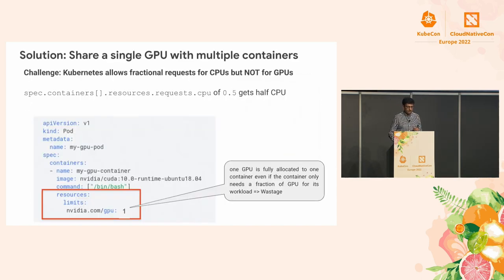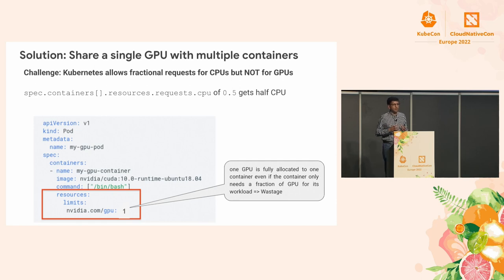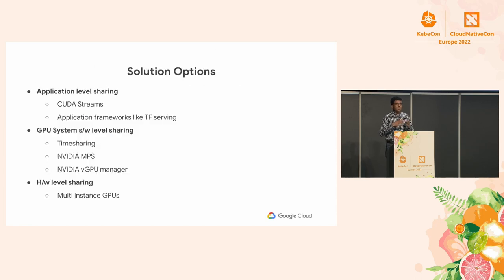The main challenge today is that Kubernetes allows fractional utilization of CPUs but does not allow fractional utilization of GPUs. A Kubernetes workload can ask for 0.5 virtual CPUs and Kubernetes knows how to allocate that. But today, you cannot ask for 0.5 GPUs in Kubernetes. As a result, one GPU is fully allocated to one workload even though the workload needs only a fraction of the GPU. There are many solutions to allow workloads to share a GPU — some work at the application level, some at the GPU system and software level, and some at the hardware layer.